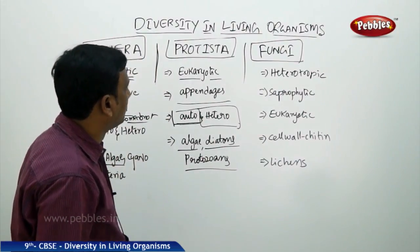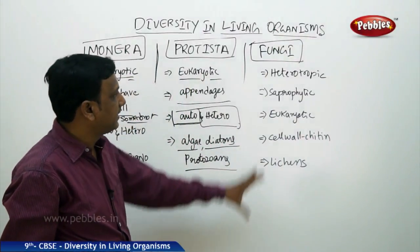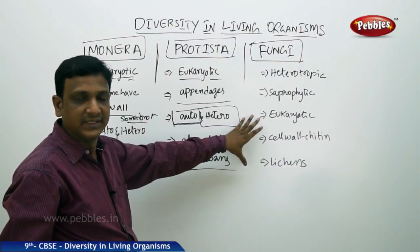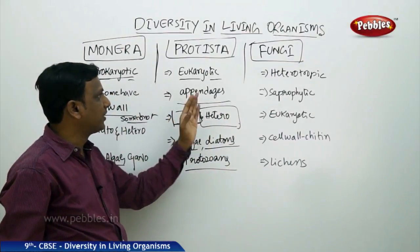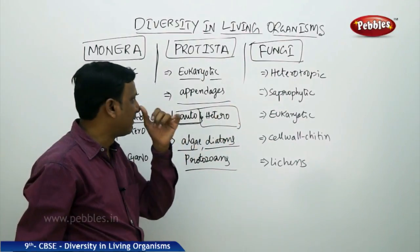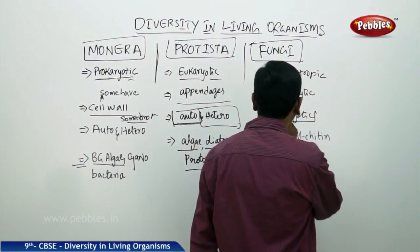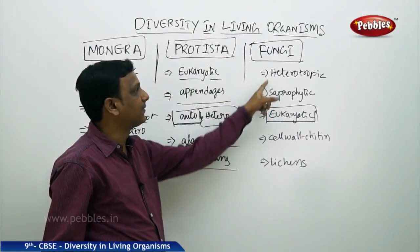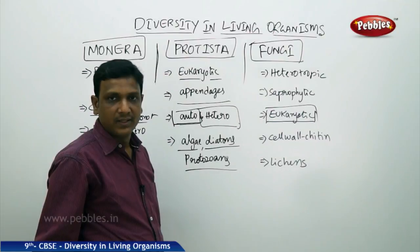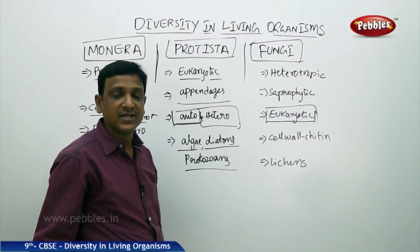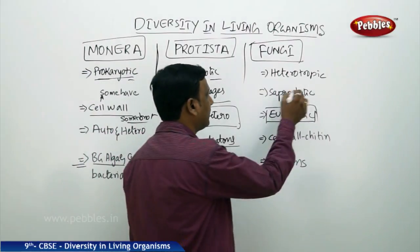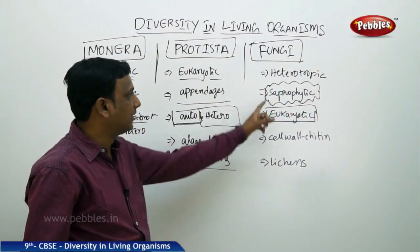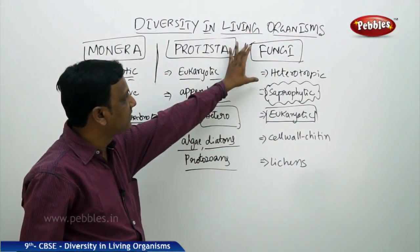Now let us look at Fungi. Fungi are organisms that are eukaryotic in nature. Most fungi are multicellular, giving them a certain level of complexity compared to the first two kingdoms. Yeast is an example of a unicellular fungus. Their cell structure is eukaryotic, with a defined nucleus and distinct cell organelles. The mode of nutrition in fungi is purely heterotrophic — fungi cannot prepare their own food. They absorb nutrients from dead and decaying matter, which is called a saprophytic mode of nutrition.